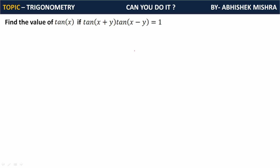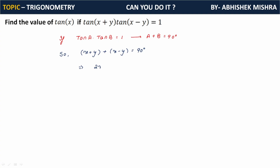Coming back to our question: find the value of tan x if tan(x+y) · tan(x-y) equals 1. We have already derived that tan A · tan B equals 1 if and only if A plus B equals 90 degrees. So we can write (x+y) plus (x-y) equals 90 degrees.